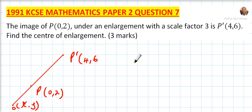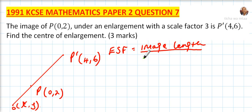Now we use a principle that we know about enlargement. Enlargement scale factor equals image length divided by object length. That is the distance from the center of enlargement to the image divided by the distance from center of enlargement to the object, which equals the enlargement scale factor which is 3.